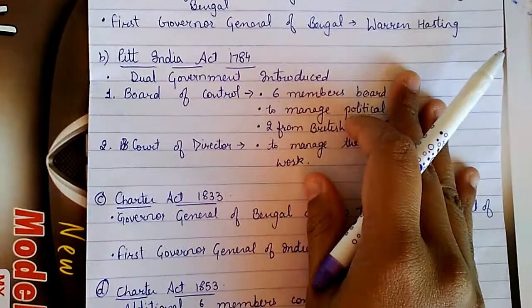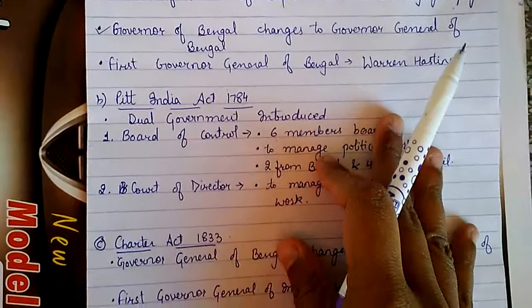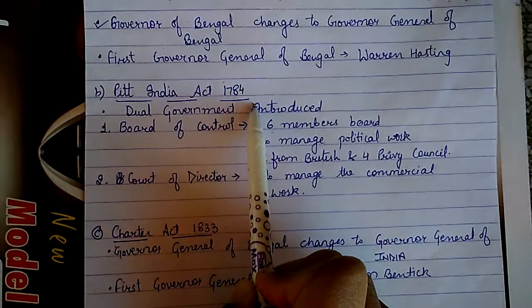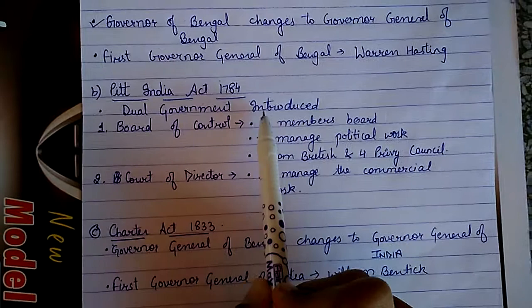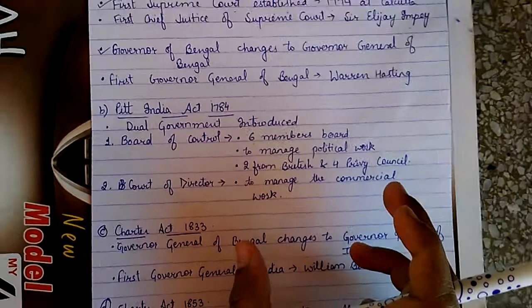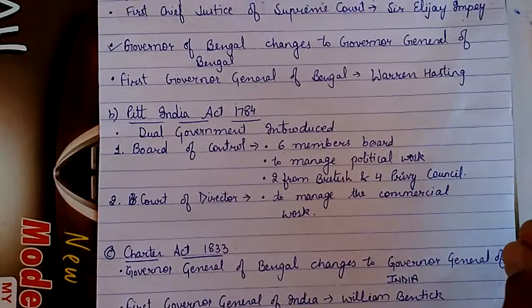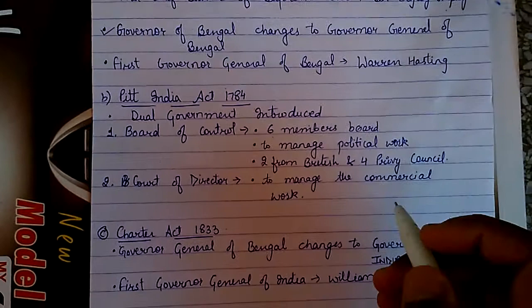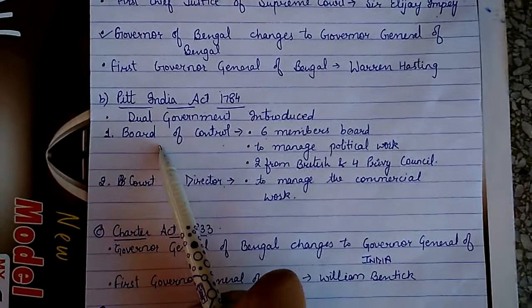Next, under Company Rule 1773 to 1857, the second important act was the Pitt India Act 1784. It is very important because for the first time in India, dual government was introduced under the Pitt India Act 1784. It is called dual government because earlier there was only one body controlling everything — political, commercial — but now they introduced dual government.